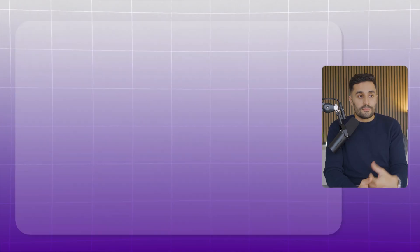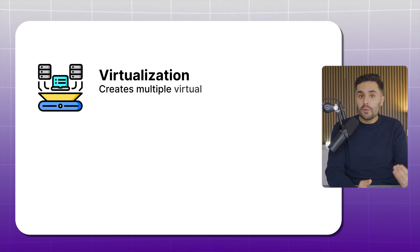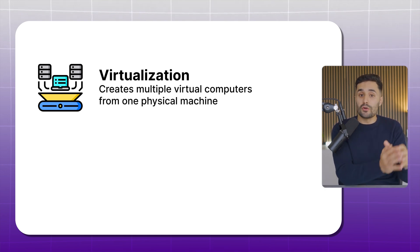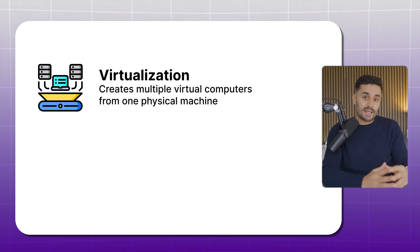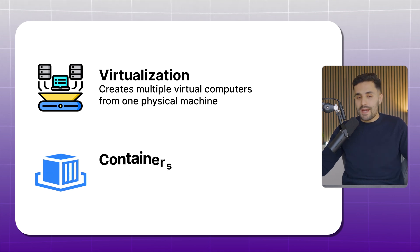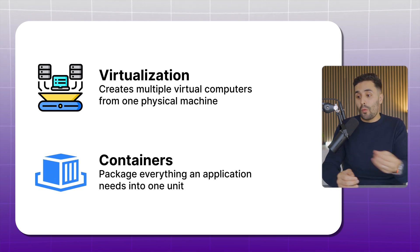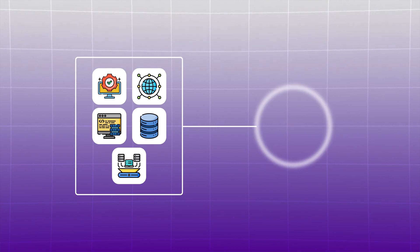Finally there's virtualization and containers. Virtualization creates multiple virtual computers from one physical machine — this is what makes cloud computing possible. Containers package everything into one single unit so moving applications between systems becomes more straightforward and nothing breaks. Understanding these fundamentals makes learning specific cloud platforms like AWS much easier, because you'll know exactly what's happening underneath.